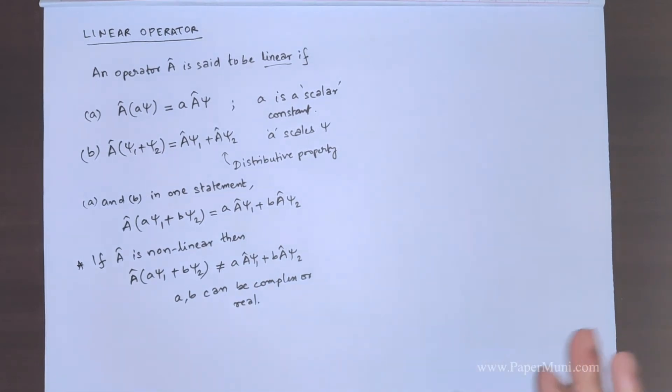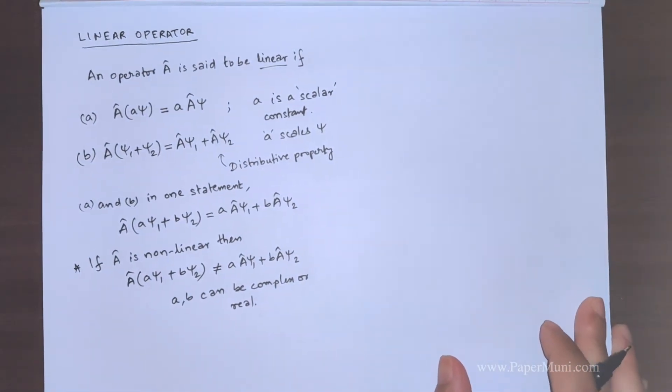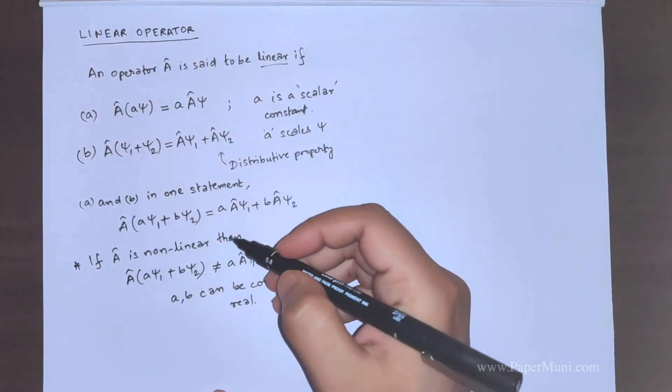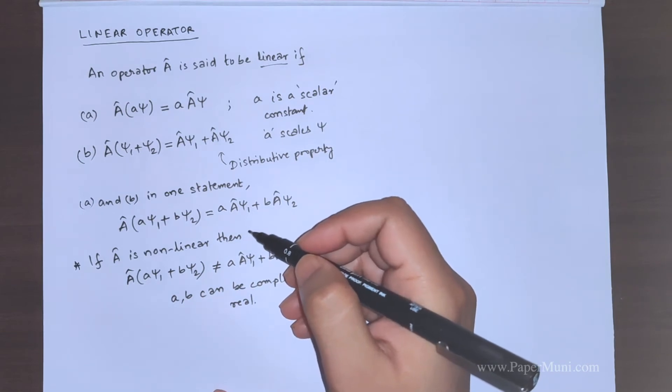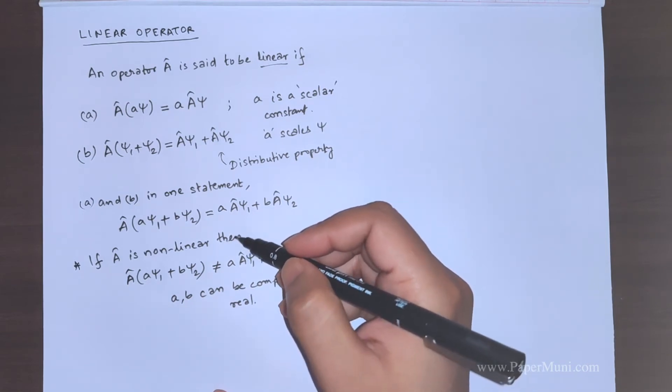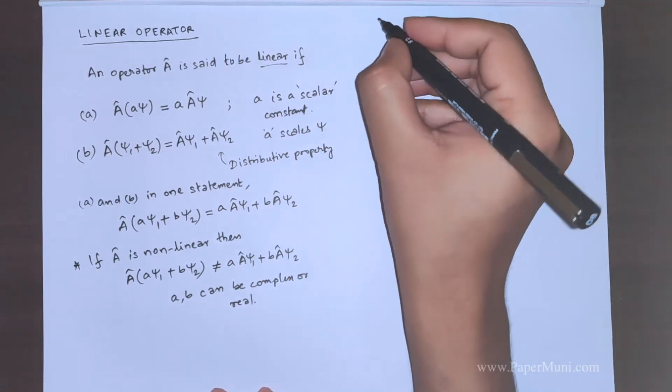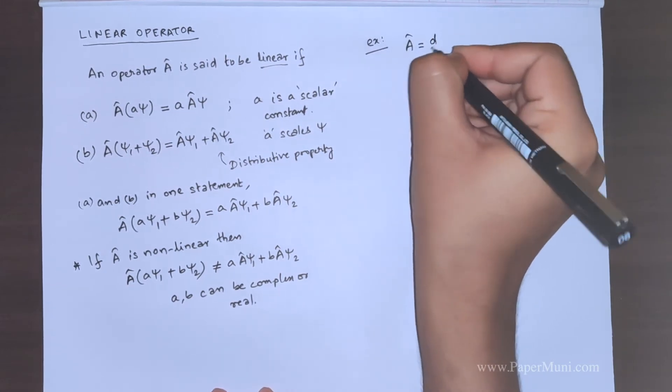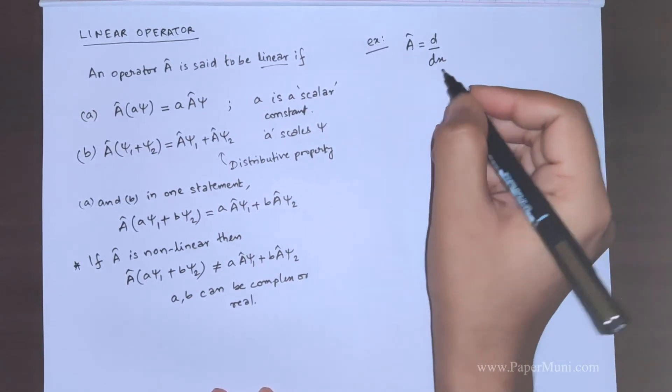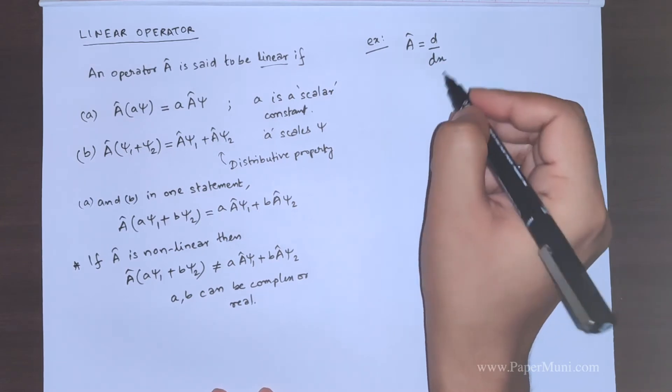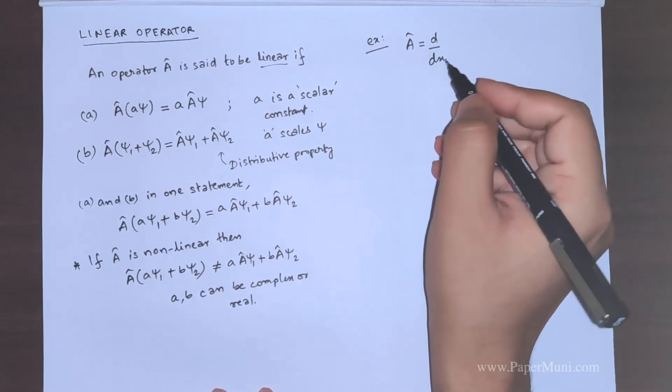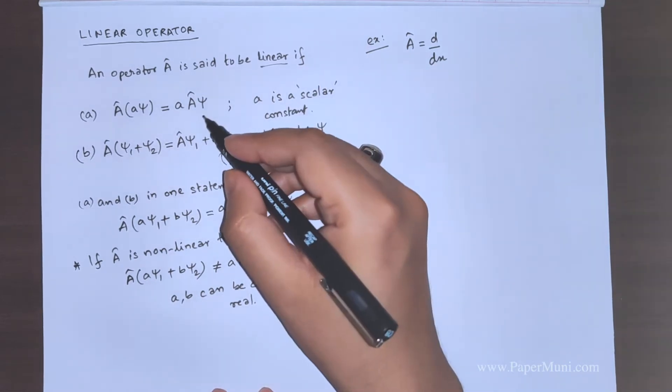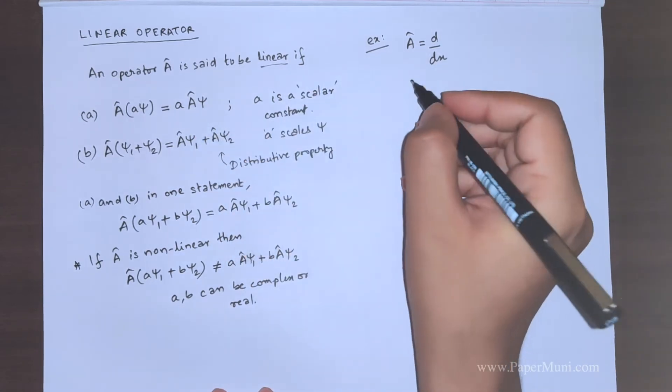Let's take an example and see how do we find out, how we tell that an operator is linear or not. We will take the example we have already taken before in previous lectures, d by dx. We had used this as an operator to explain the definition of operator. Let's check these rules. Let's see if it follows the first one.